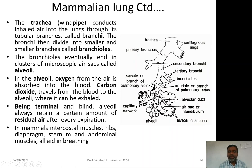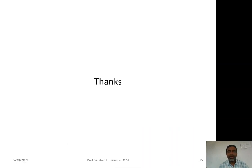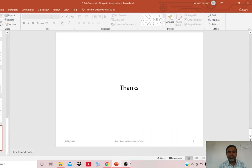To bring about respiration and contract and relax the lungs, the ribs, intercostal muscles, the diaphragm below the lungs, the sternum of the thoracic cavity, and the abdominal muscles all work together in a coordinated manner to bring about respiration or breathing. This concludes the comparative account of lungs in vertebrates.